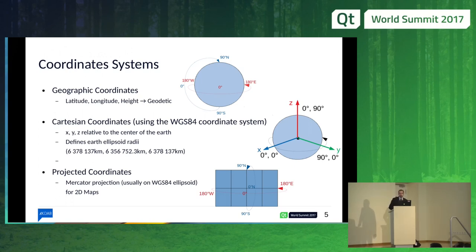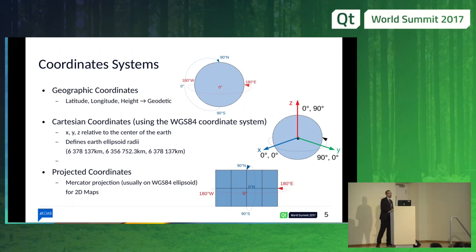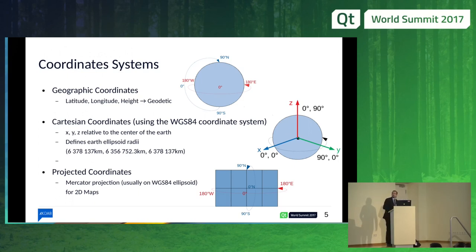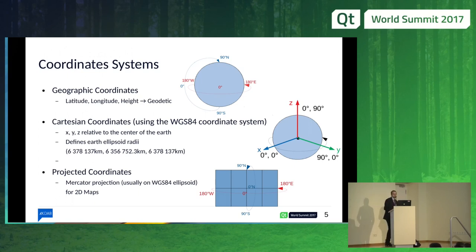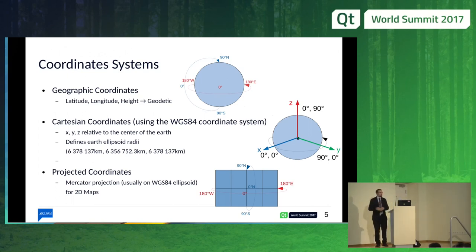Latitude goes from minus 90 degrees to 90 degrees, and longitude from minus 180 degrees to 180 degrees. Unfortunately for us, GPUs expect coordinates to be in Cartesian space.